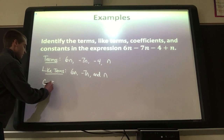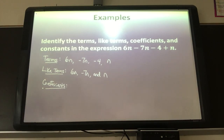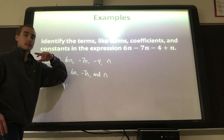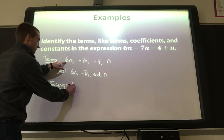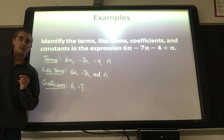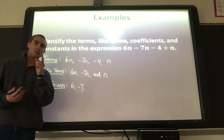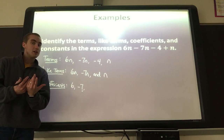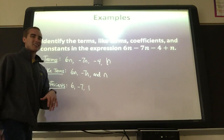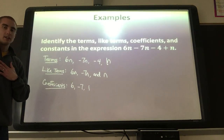Coefficients are the number in front of the variable. We've got three terms with variables: 6n, negative 7n, and n. So the coefficients are 6 and negative 7. And then for just n — if it's just the variable itself, there is still a coefficient. How many n's are there? Just one. So the coefficient is 1, but we don't write 1n, just like we don't write 2 over 1 instead of 2. We just write n.